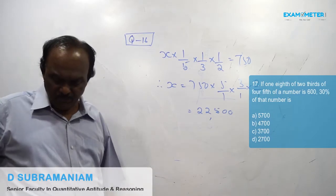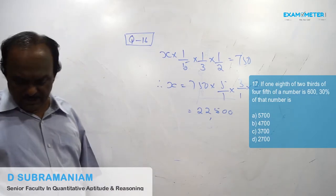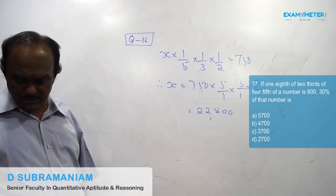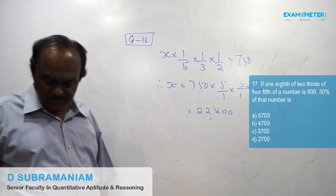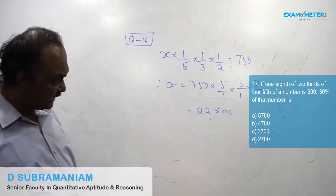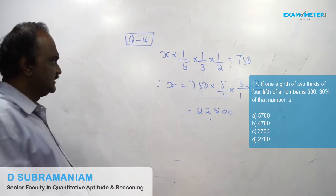Seventeenth problem: If one-eighth of two-thirds of four-fifths of a number is 600, then 30% of that number is what?